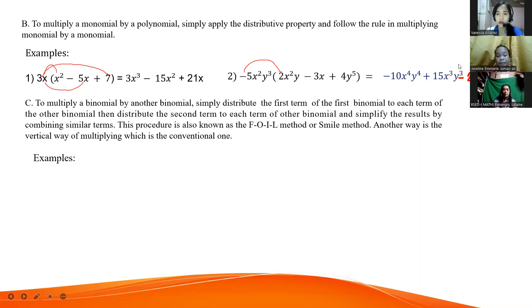Next, 15. Why 15? 5 times 3, the answer is 15. Right? Negative and negative is positive. Very good. Next, x squared times x, the answer is x to the power of 3. And y to the power of 3, simply copy.